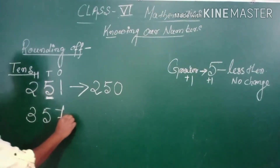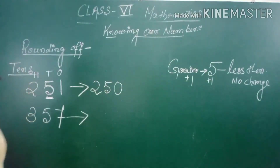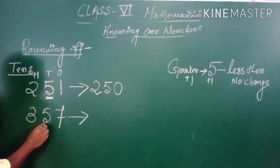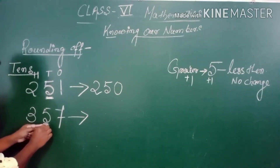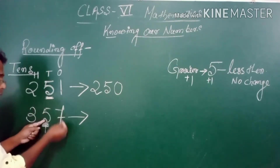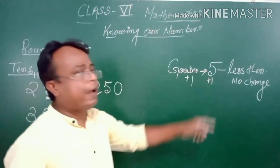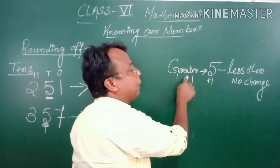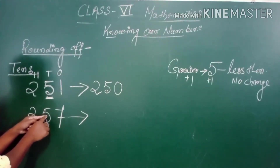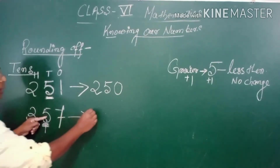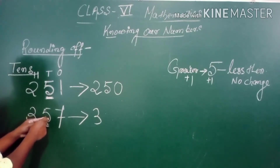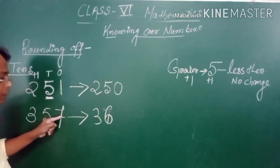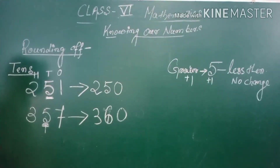Let us take one more example: 357. We are rounding up to nearest 10. The tens digit is 5. See the next digit — it is 7. Is 7 less than or greater than 5? It is greater than 5, so we add 1 to the tens digit: 5 plus 1 equals 6. The units digit becomes 0. So 357 rounded to nearest 10 is 360.